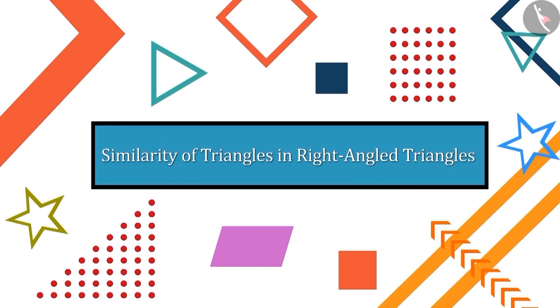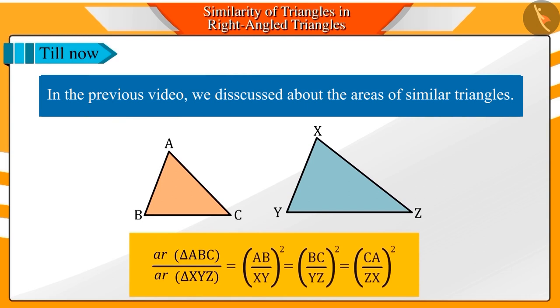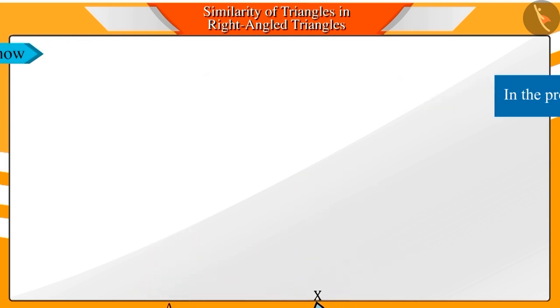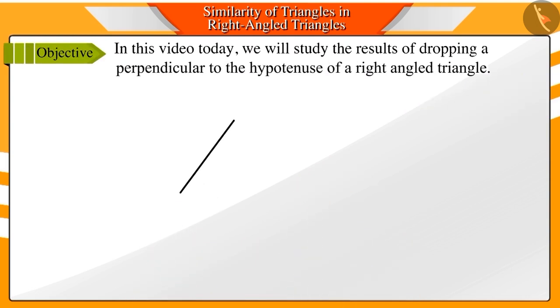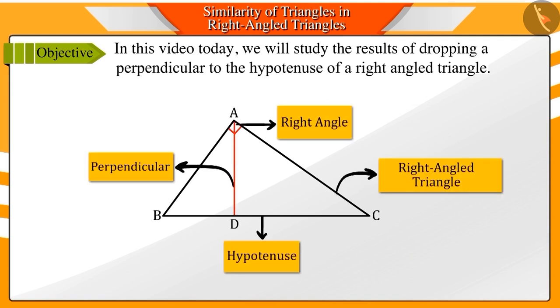Welcome to this video. In the previous video, we learned about the area of an equilateral triangle. In this video, we will study the outcome of dropping a perpendicular to the hypotenuse of a right-angled triangle.